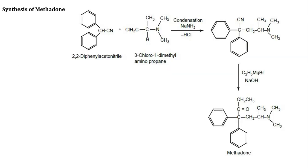Next is methadone, whose official preparation is methadone hydrochloride. Its mechanism of action is similar to that of morphine — it selectively interacts with the mu receptor and depresses the CNS. It can be synthesized by the reaction between diphenylacetonitrile and chlorodimethylaminopropane in the presence of sodium amide, resulting in the synthesis of an intermediate. This intermediate is further treated with ethylmagnesium bromide and sodium hydroxide, resulting in the synthesis of methadone.